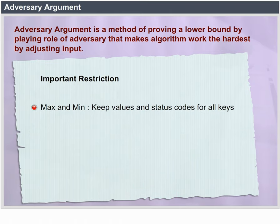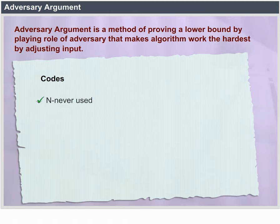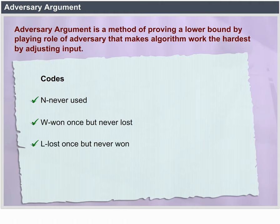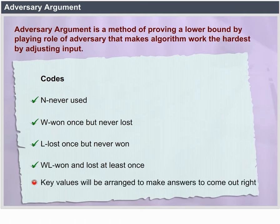For Max and Min, we keep values and status codes for all keys. N represents never used. W represents won once but never lost. L represents lost once but never won. WL represents won and lost at least once. Key values will be arranged to make answers come out right.